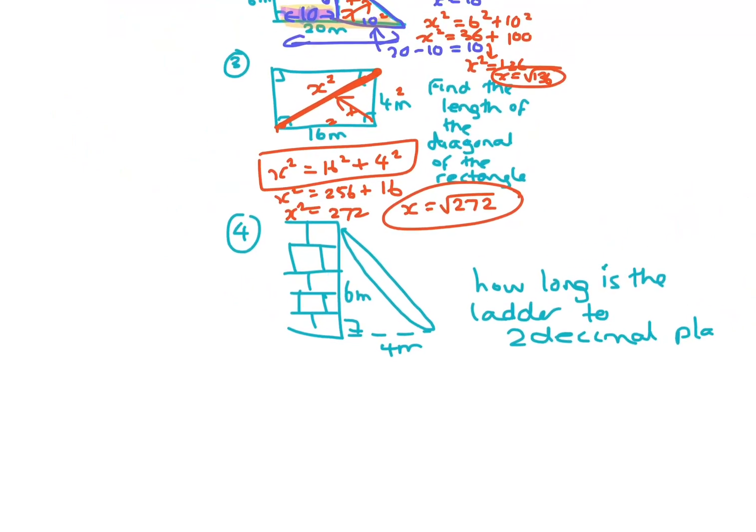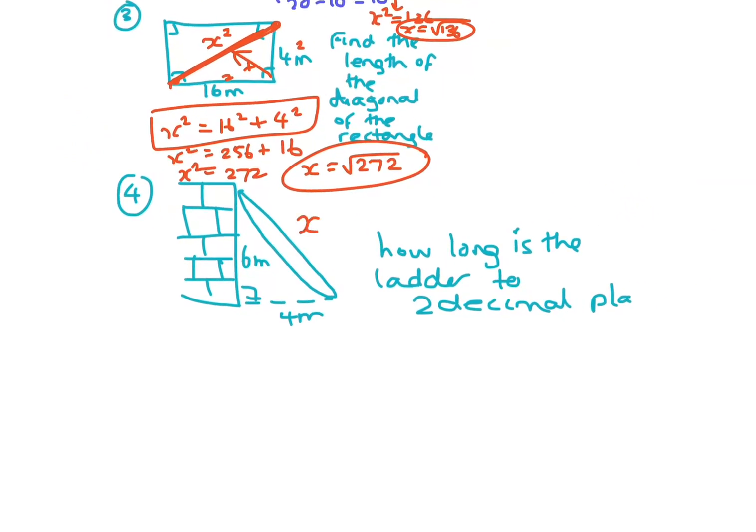Okay, this next one here, we're just doing it to two decimals. So find the length of the ladder. So once again, it's on the hypotenuse. So you add the two smaller sides. So X squared is 6 squared plus 4 squared. X squared is 36 plus 16. X squared is equal to 52. And X is the square root of 52. And if you square root 52, you end up with 7.2.